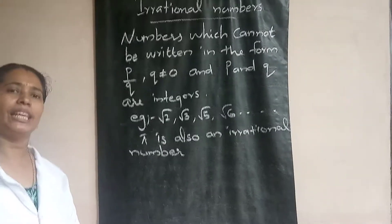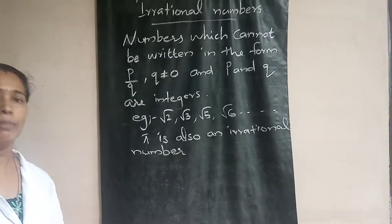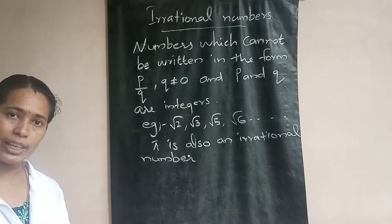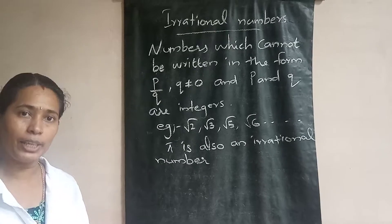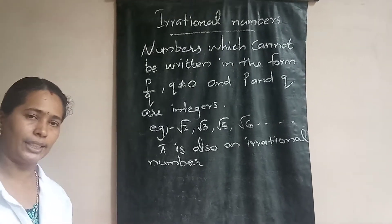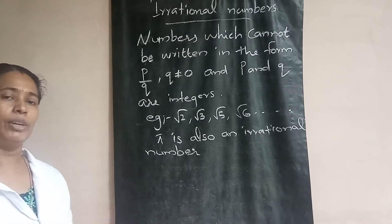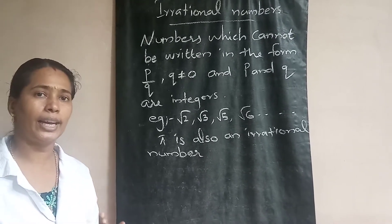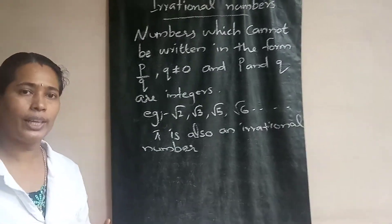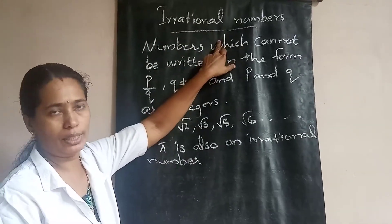Good morning children. Today we are discussing about irrational numbers. From the last class we studied about rational numbers — what are rational numbers, how can we represent them on a number line, etc. You studied that in lower classes. Last class you also studied how to insert rational numbers in between given numbers. Today we are going to discuss about irrational numbers.